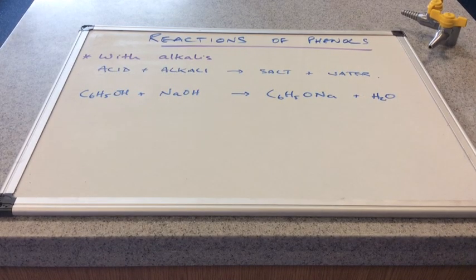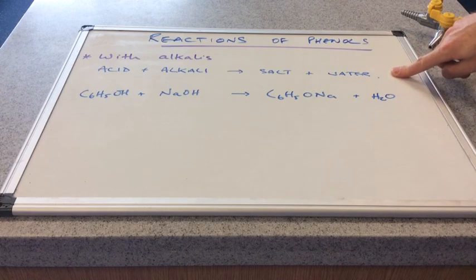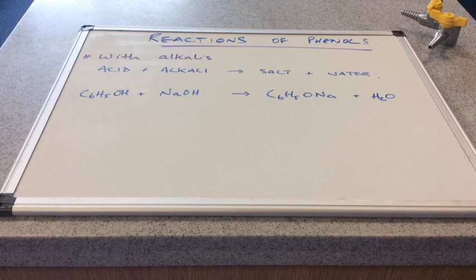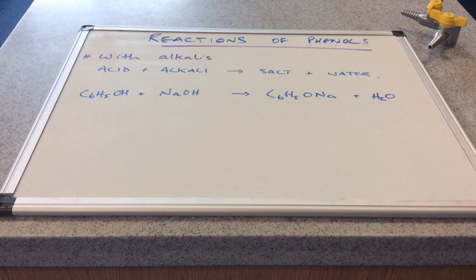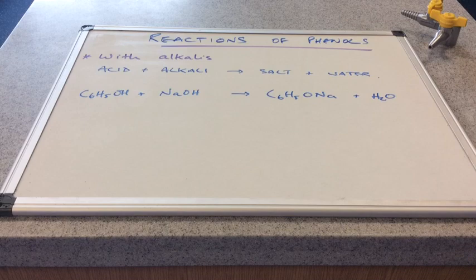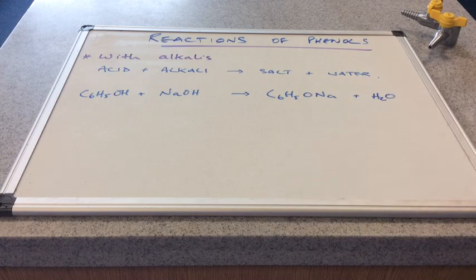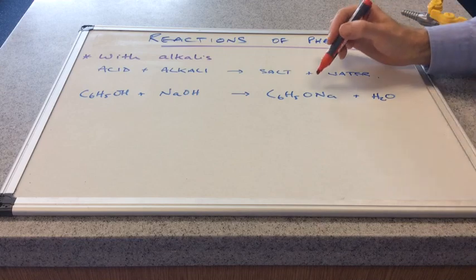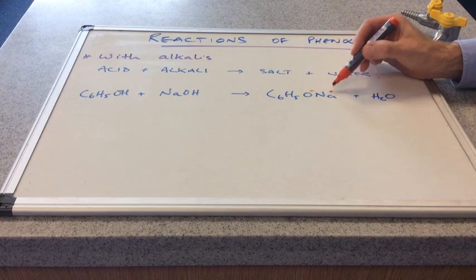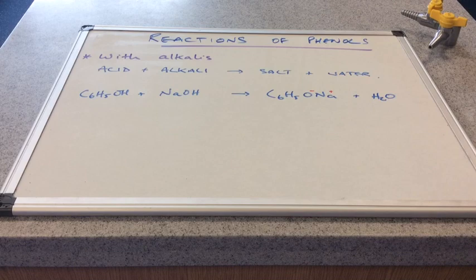So we'll start with the reaction with alkalis. So up at the top there, I've got the absolute general equation for the reaction between an acid and alkali. So that's acid plus alkali gives salt and water. So the acid in this case is phenol, C6H5OH. And that's reacting with sodium hydroxide, our alkali. And we get this salt, C6H5ONa and obviously H2O. Now sometimes you might see the charges shown. So don't be afraid if you see that there. That's absolutely fine to represent it like that. So either way is fine. But anyway, that is the salt.